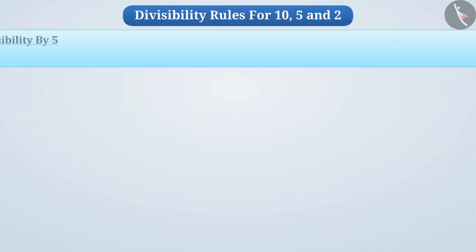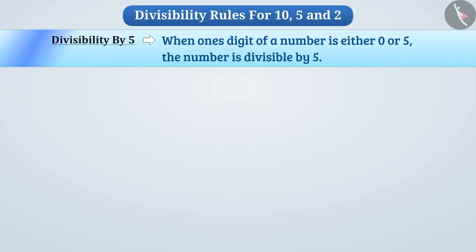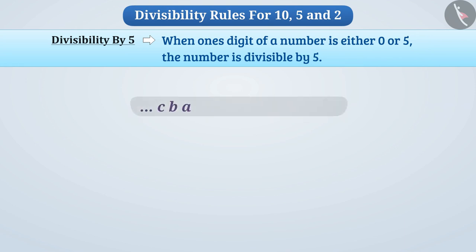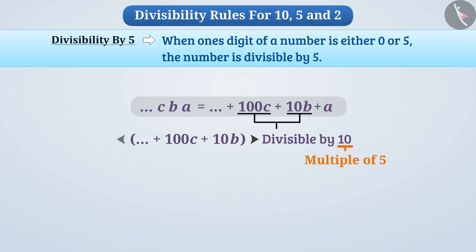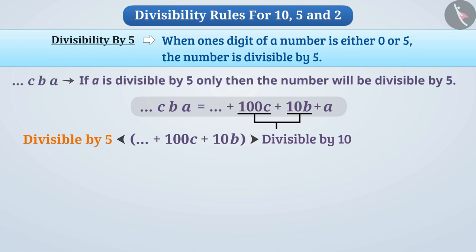Now let's know about the divisibility rule for 5. This rule tells us that when the ones digit of a number is either 0 or 5, the number is divisible by 5. Let's see how this rule works. Suppose we take a number and write it in general form. We see that all these terms are divisible by 10, so their sum will also be divisible by 10. Since 10 is a multiple of 5, we can say that this sum will also be divisible by 5.